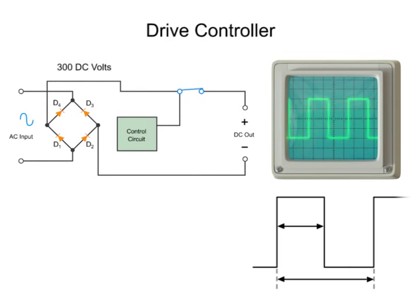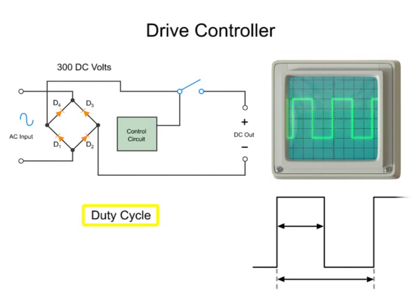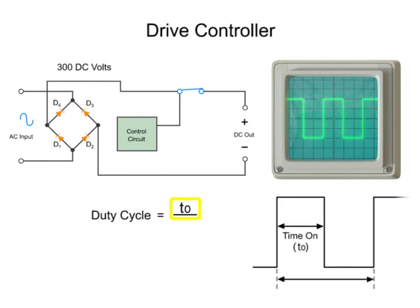One of the parameters of a square wave is the duty cycle. This is derived by dividing the time on duration, or width, T sub zero, by the duration of the wave period, T.